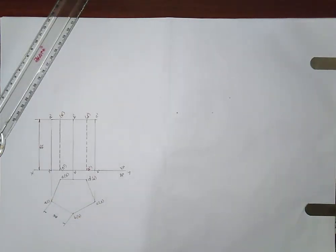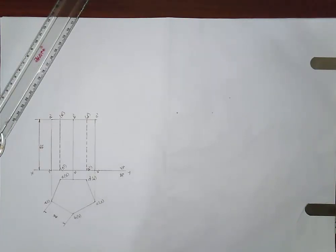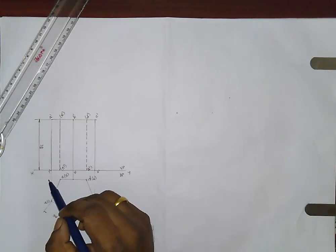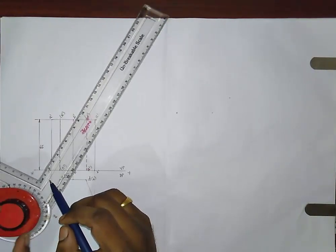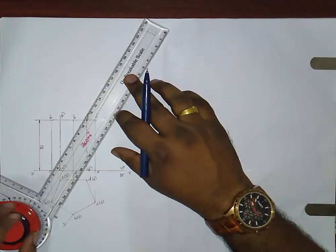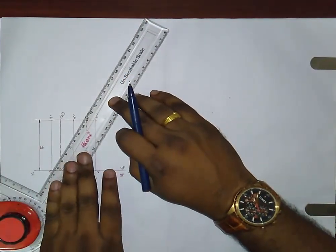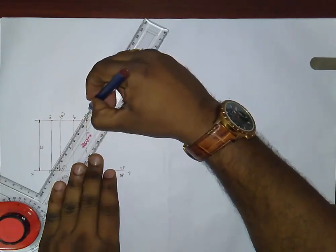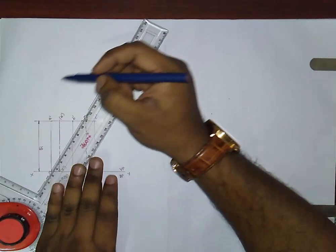The cutting plane makes an angle of 60 degrees to the HP, so it will come above the XY line. The cutting plane makes a 60 degree angle and cuts the solid through the leftmost extreme base point. Take 60 degrees on the drafter and draw a 60 degree line through this point in order to draw the cutting plane. This is your cutting plane.